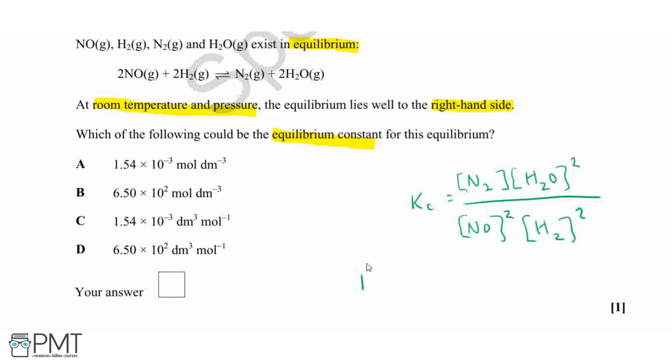Now, if our equilibrium lies to the left-hand side, we would expect a value of less than 1. So we're looking for standard form with negative indices. Or if we're looking for an equilibrium which lies to the right-hand side, we're going to be looking for a value that's much greater than 1. And that's because we will have more of the products on top in our fraction. Therefore, we will get a larger value for Kc.